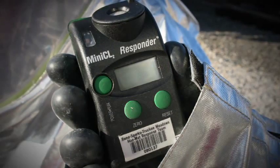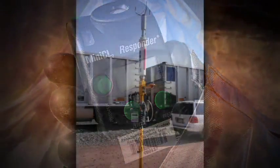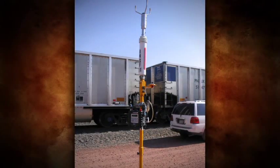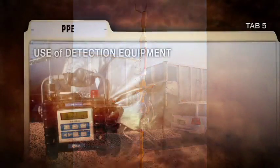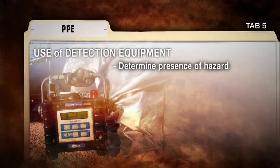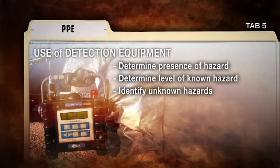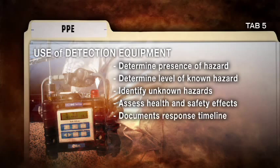Air monitoring helps determine safe areas and evacuation zones, and helps control response tactics — such as deciding if or when to move the command post to another safe area due to changing conditions. Uses of detection equipment include the determination of whether a hazard is present, the determination of the level of a known hazard, identifying unknown hazards, assessment of health and safety effects, and documenting the response timeline.